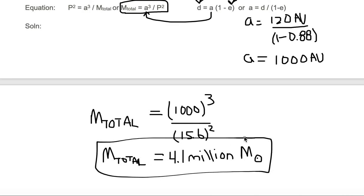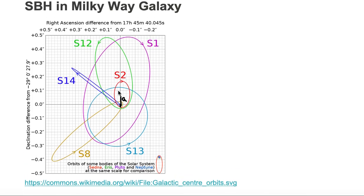And that's how you find the amount of mass that's contained within this orbit of S2. Now we expect most of that mass to be located at the point SgrA star.